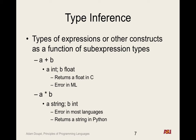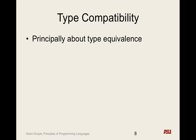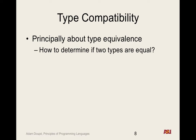So type inference is how we infer the result of an expression. Now, type compatibility — the principal question here is: what types are actually equivalent, meaning what does the type system think of two types being equal? If we have a type centimeter defined as an integer, and a type inch defined as an integer, and we declare variable x as centimeter and y as inch, can we assign x equals y?